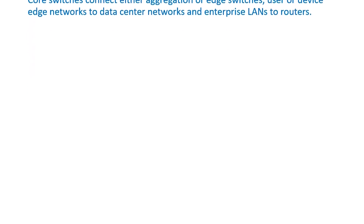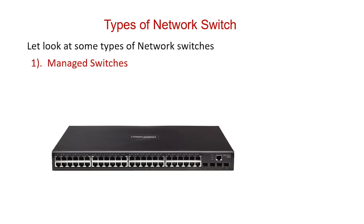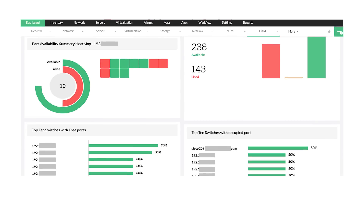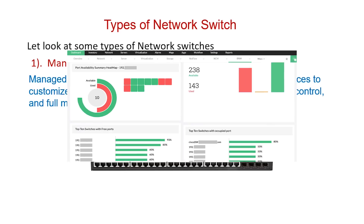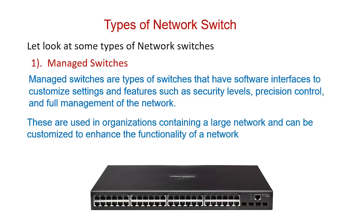As we now know what a network switch is and how they function, let's quickly look at the types of switches. First, managed switches. These are types of switches that have software interfaces to customize settings and features such as security levels, precision control, and full management of the network. They are used in organizations with large networks and can be customized to enhance network functionality.